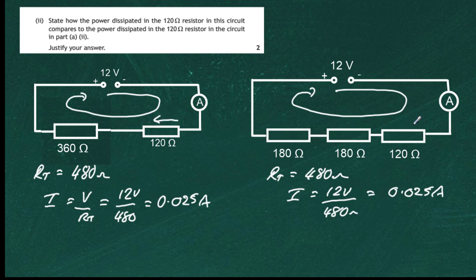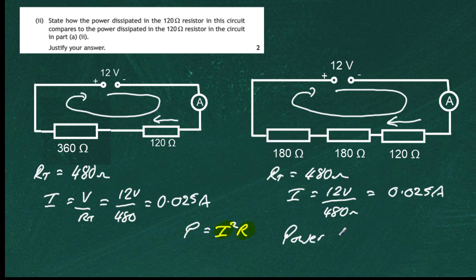That identical current passes through the 120 ohm resistor in both circuits. If we remember our power equation P equals I squared R, we have identical current and identical resistance in each case, which means only one thing: the power dissipated in both resistors is the same. The power dissipated is equal in both circuits.